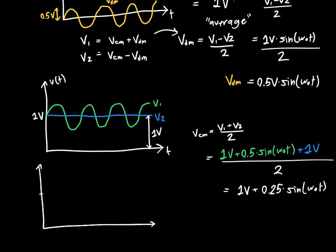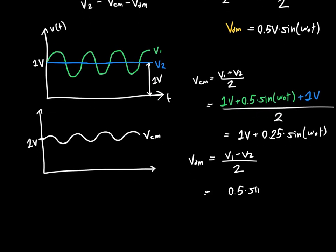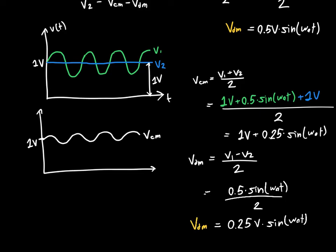Plotting this counter-example: the common mode voltage is still biased about one volt, but it's now a reduced-amplitude sine wave of the same frequency — so the common mode voltage can actually be a function of time. Similarly, VDM = (v1 − v2) / 2: the one-volt terms cancel, leaving 0.5·sin(ω₀t) / 2 = 0.25·sin(ω₀t). The differential mode voltage is in phase with the common mode voltage but biased about zero instead of one volt.